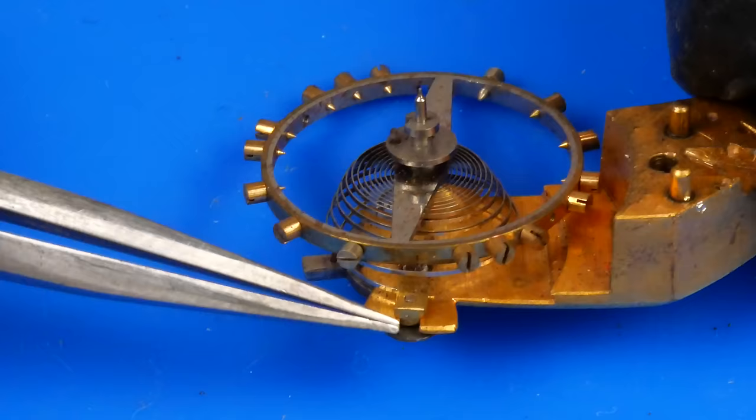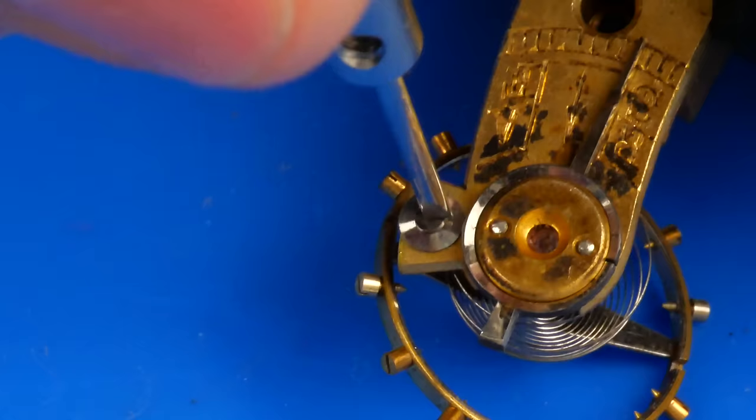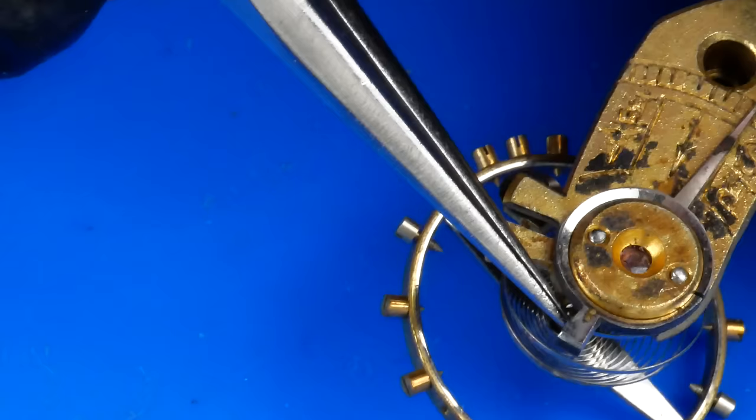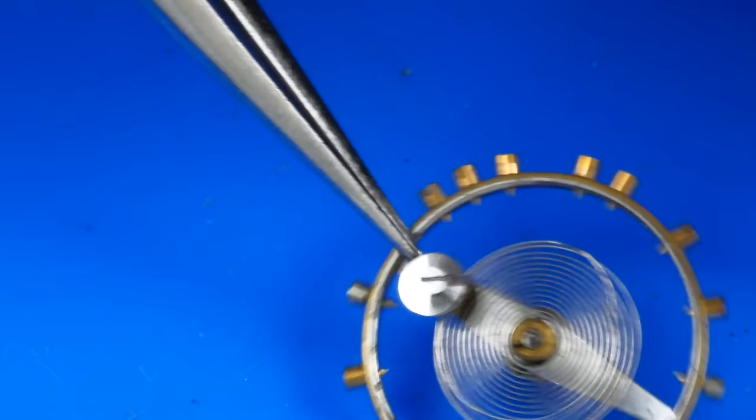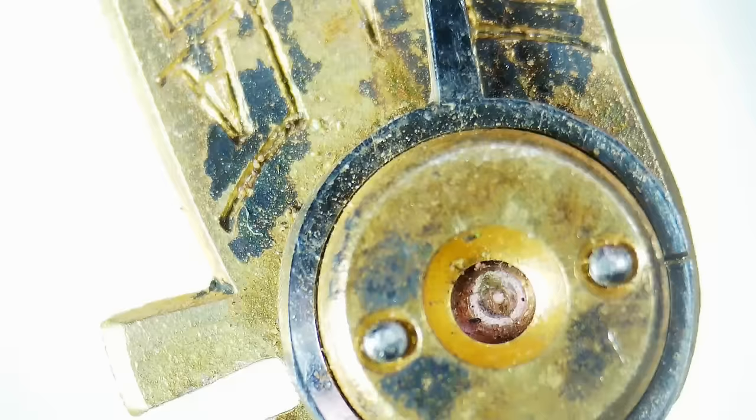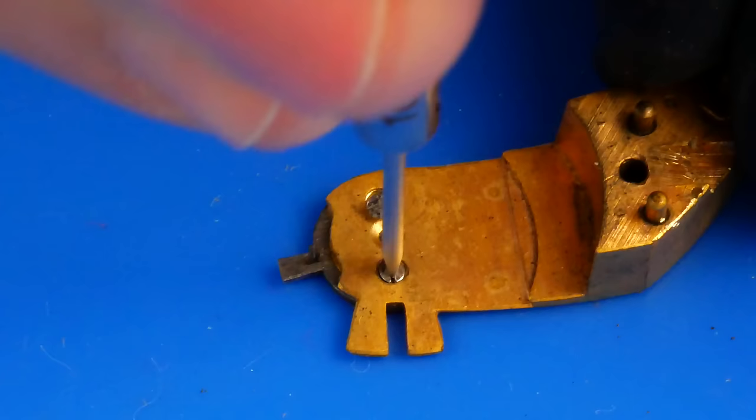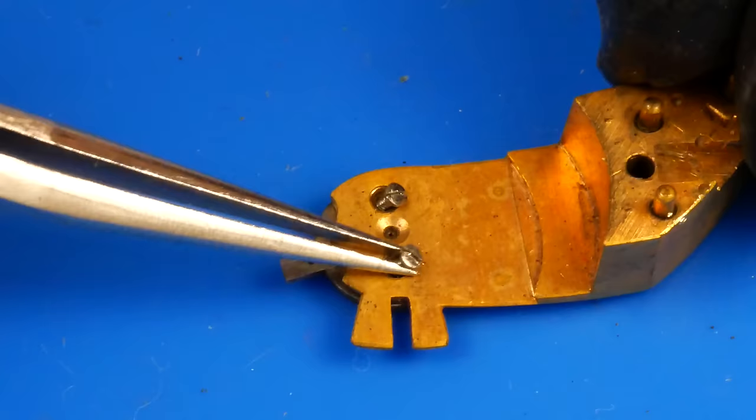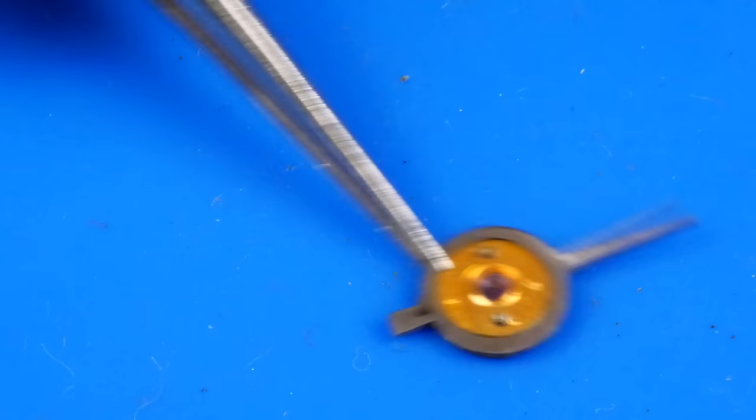The balance is removed from the balance cock by disconnecting the hairspring stud from this slot. Fortunately, the jewel looks fine, though a bit dirty. The capstone setting is separated from the whole jewel for ease of cleaning.